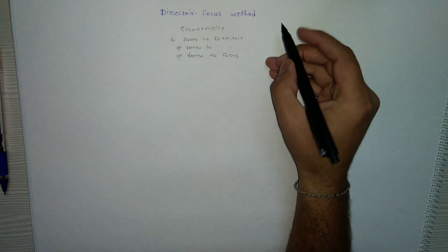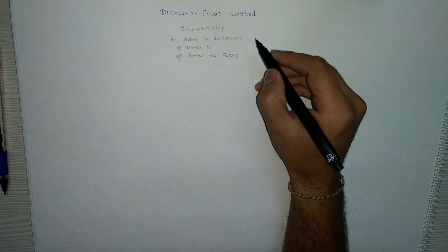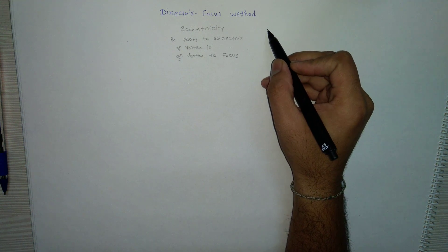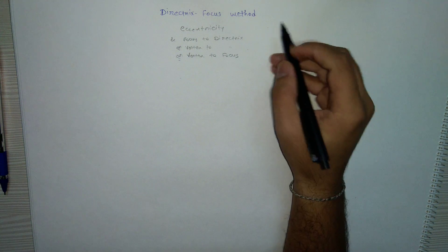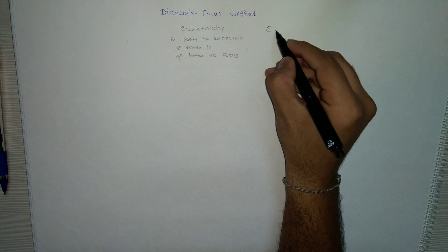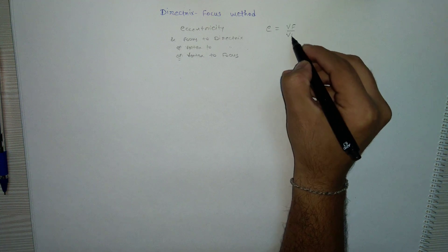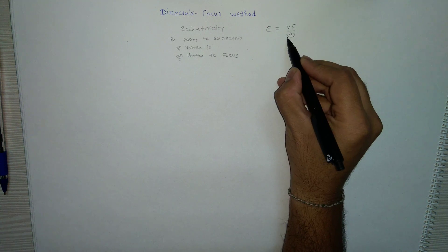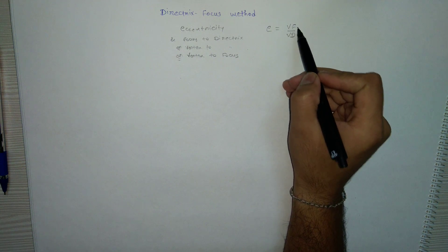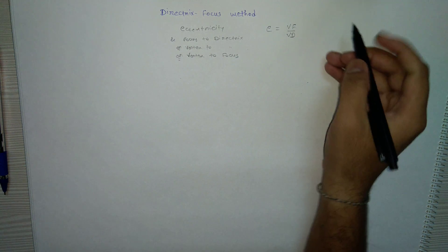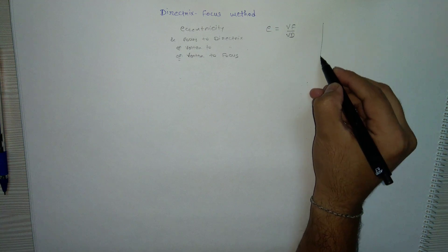First, let us understand each term. Eccentricity is the ratio of the distances from vertex to focus divided by vertex to directrix. In short, we define E as Vf/Vd — vertex to focus divided by vertex to directrix.